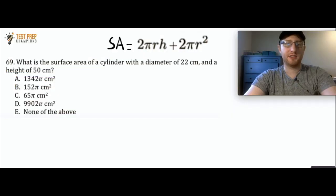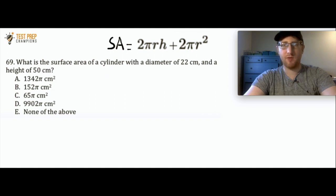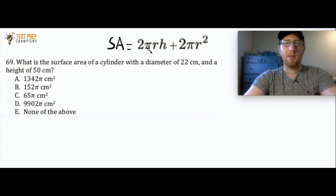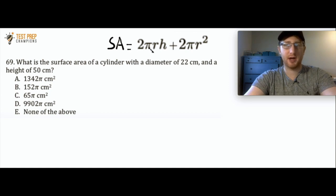What is the surface area of a cylinder with a diameter of 22 centimeters and a height of 50 centimeters? Is it A, B, C, D, or E? Pause the video and give this one a shot. I'm giving you the formula right here: surface area equals 2πrh plus 2πr². You'll need to look that up on the formula sheet on your test, but I'm providing it now for the sake of time.